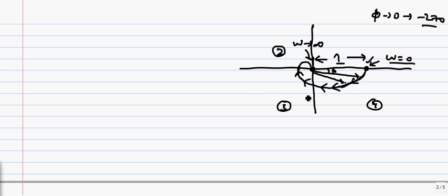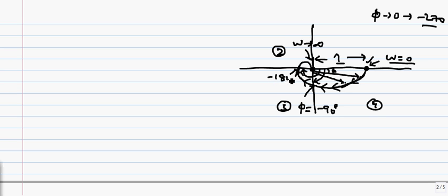There are two key points on the plot. One is where the phase angle is −90°, which lies on the negative imaginary axis. The other is where the angle from the real axis is −180°, which lies on the negative real axis. We want to find the values of ω at which the phase angle equals −90° and −180°.